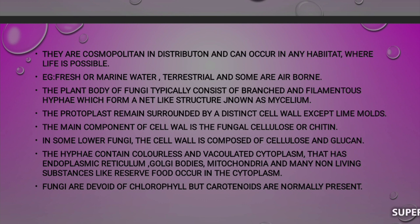The protoplast remains surrounded by a distinct cell wall, except in slime molds where it is absent. The main component of the cell wall is fungal cellulose or chitin. In some lower fungi, the cell wall is composed of cellulose and glucan.